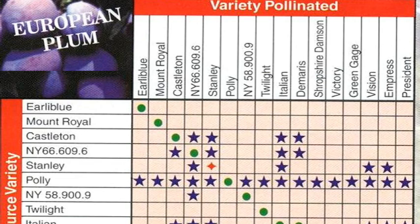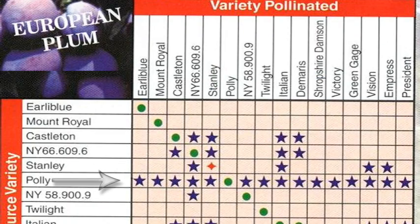Here in my video I have an example of a chart for plums. If you are trying to determine what's a good pollen source, you follow a line from the pollen source down from the variety you want to pollinate until the two intersect. If it's a clear open area on the chart, it means it can be relied on to pollinate that variety. A blue star indicates a recommended pollinator, red marking means the fruit is partially self-fruitful, and a green marking means you should not use that variety to pollinate the variety in question.